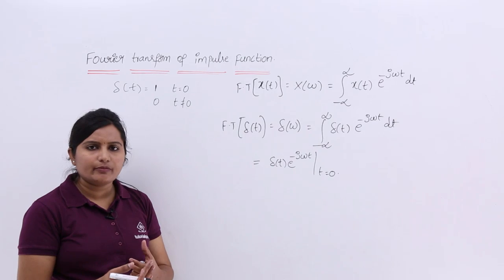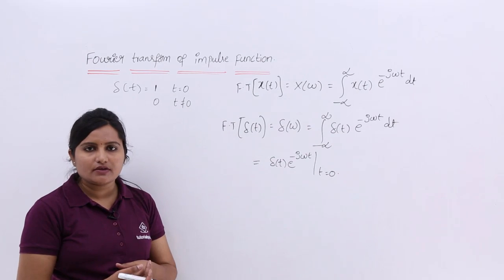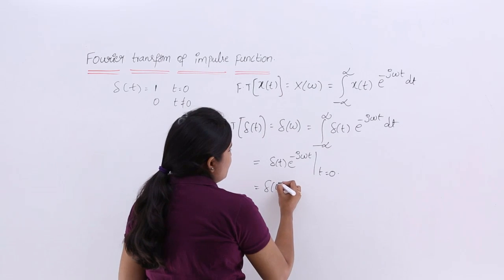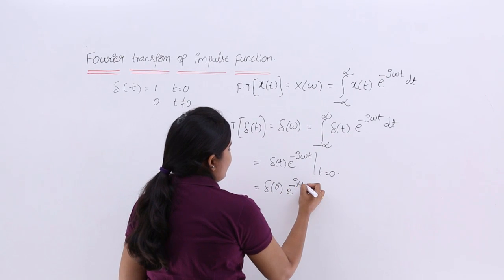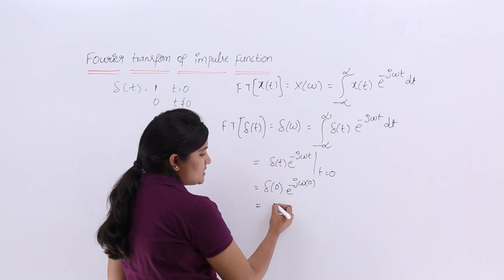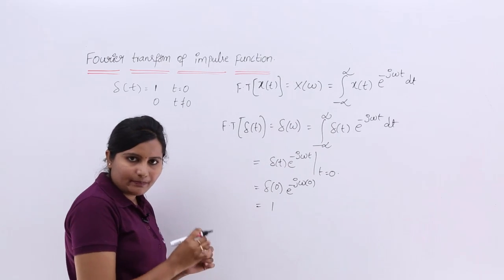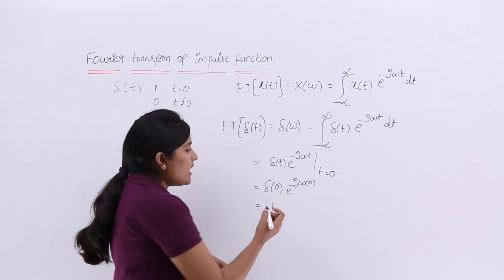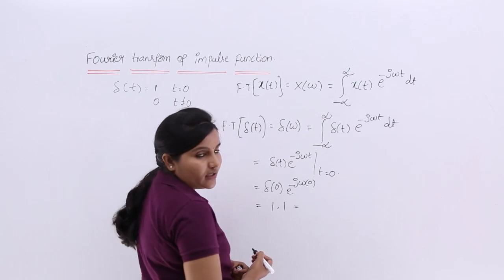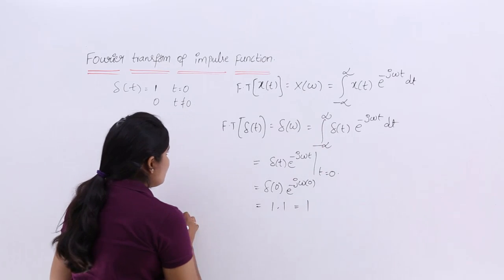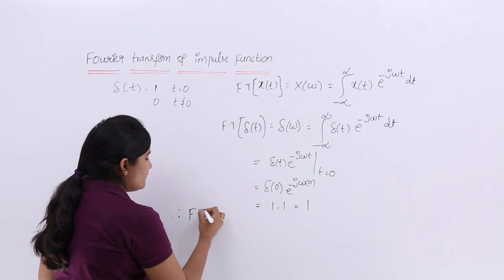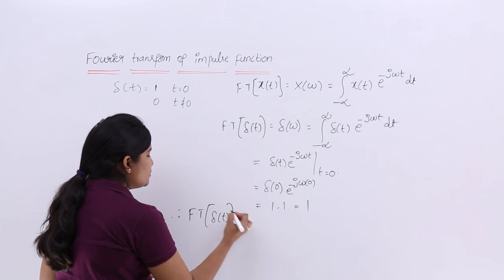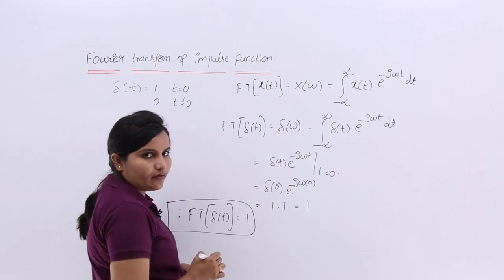So the result is δ(0) · e^(−jω·0). Now δ(0) = 1, since the impulse function at t = 0 equals 1, and e^0 = 1 as well. So 1 × 1 = 1. Therefore, the Fourier transform of the impulse function δ(t) is equal to 1.